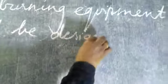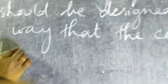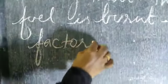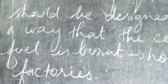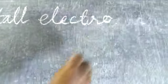Next, fuel burning equipment should be designed in such a way that the complete fuel is burnt. The equipment at homes and factories should be such that complete fuel is burned and no residue is left, so that less smoke is liberated.